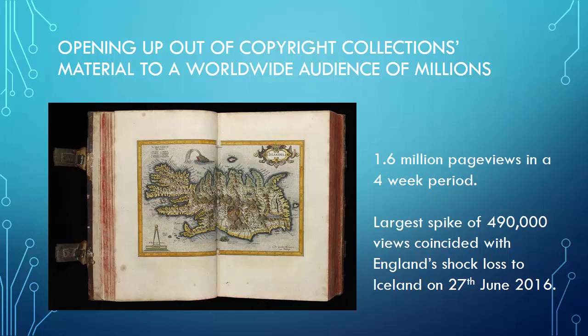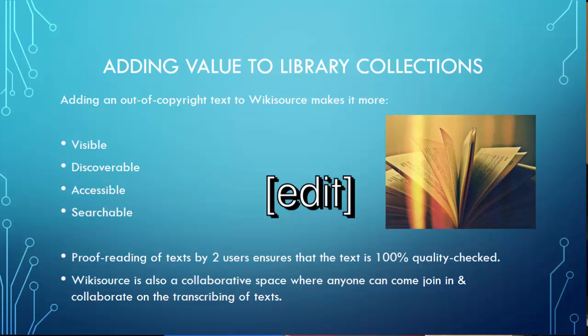The largest spike in views coincided with England's shock loss to Iceland — so apologies for bringing that up if anyone's still upset. Adding out-of-copyright text to Wikisource makes it more visible, discoverable, accessible, and searchable. By proofreading the text by two different users, it ensures the text is 100% quality-checked.